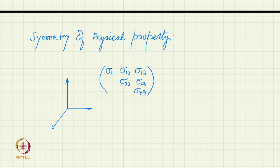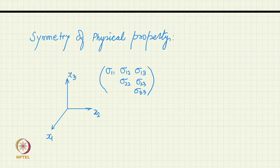I am writing only the six components which are lying on the main diagonal and above it; the components below the diagonal are equal to the components above the diagonal by the symmetry of the matrix. This is the electrical conductivity tensor measured with respect to some axis.